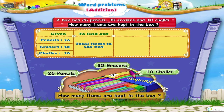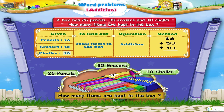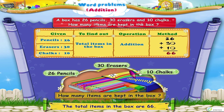Twenty-six plus thirty plus ten. Six plus zero plus zero equals six. Two plus three plus one equals six. So, the total items in the box are sixty-six.